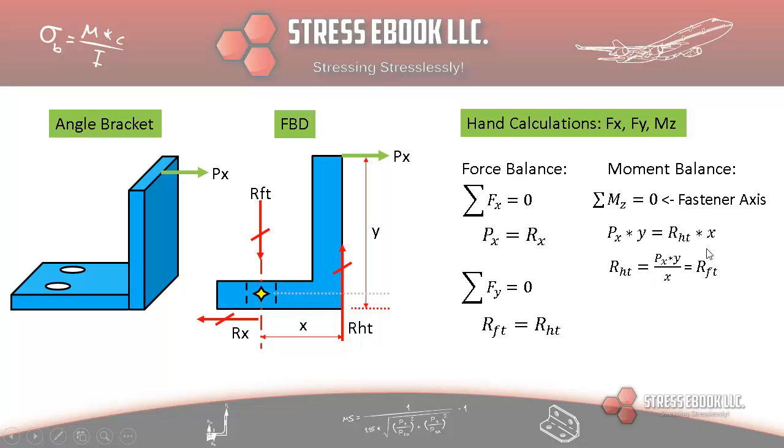So in this scenario, we have a slightly larger X. And again, due to this equation, we have that same reaction, which is the same force that the RHT would be equal to because of the sigma FY equal to zero equation of equilibrium.